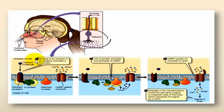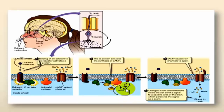Those molecules are signals coming from the outside. They bind to receptors — in that case, a G-protein coupled receptor — resulting in the formation of a chemical signal, cyclic AMP, which acts on ion channels, causing them to change conformation and open.